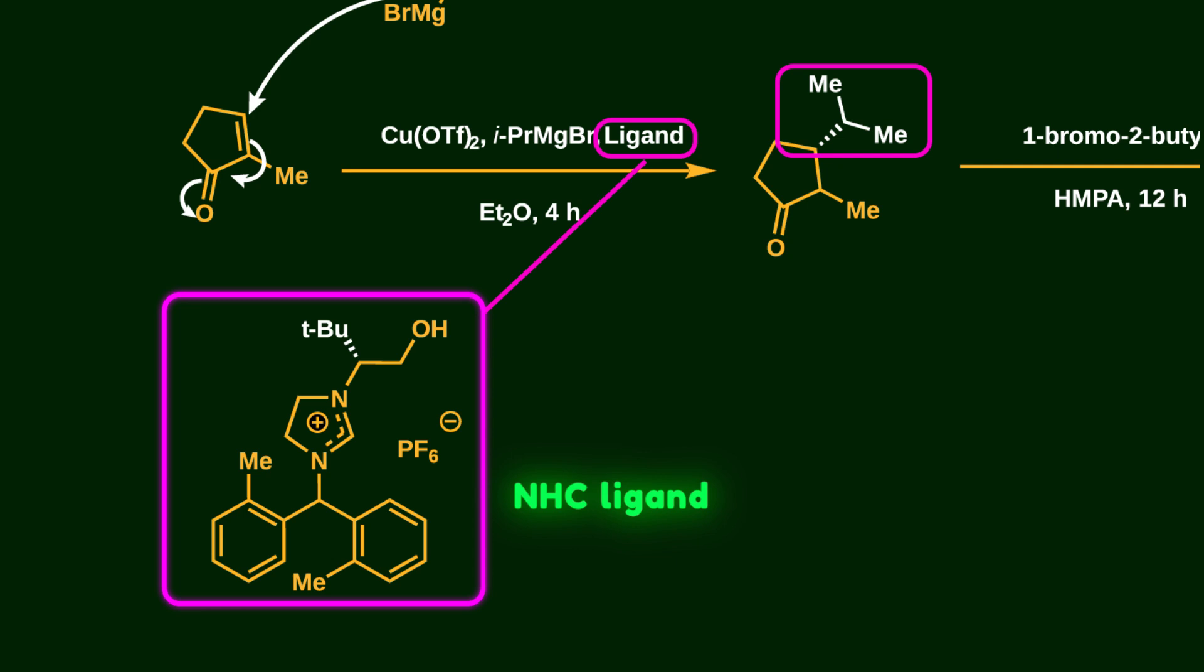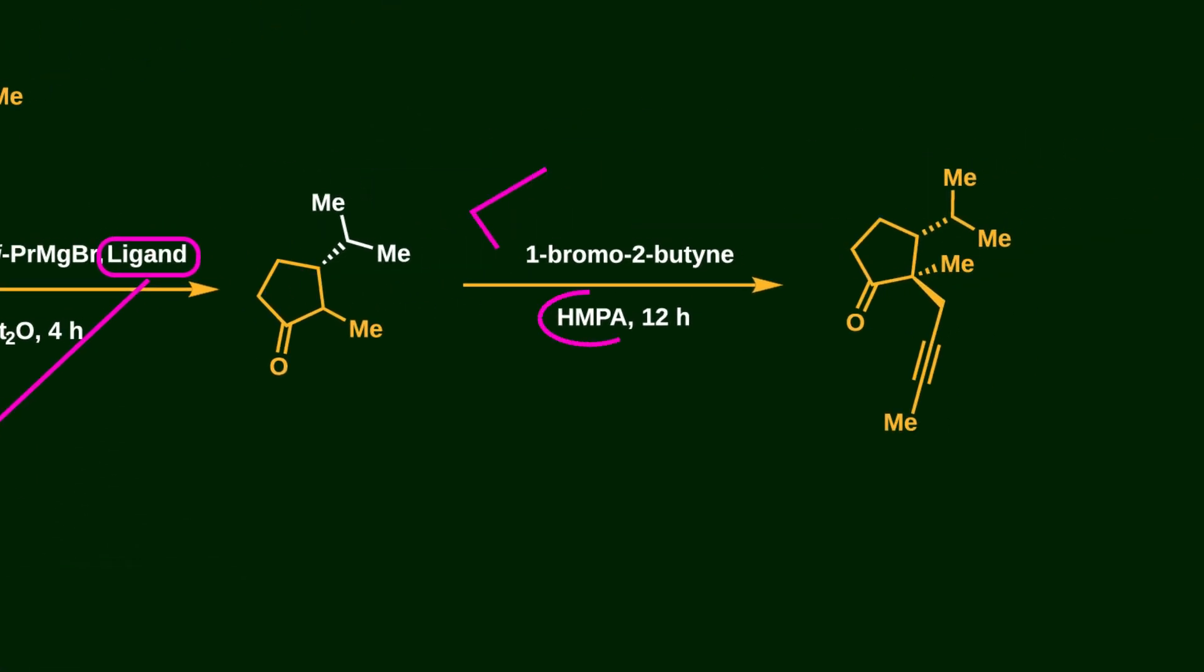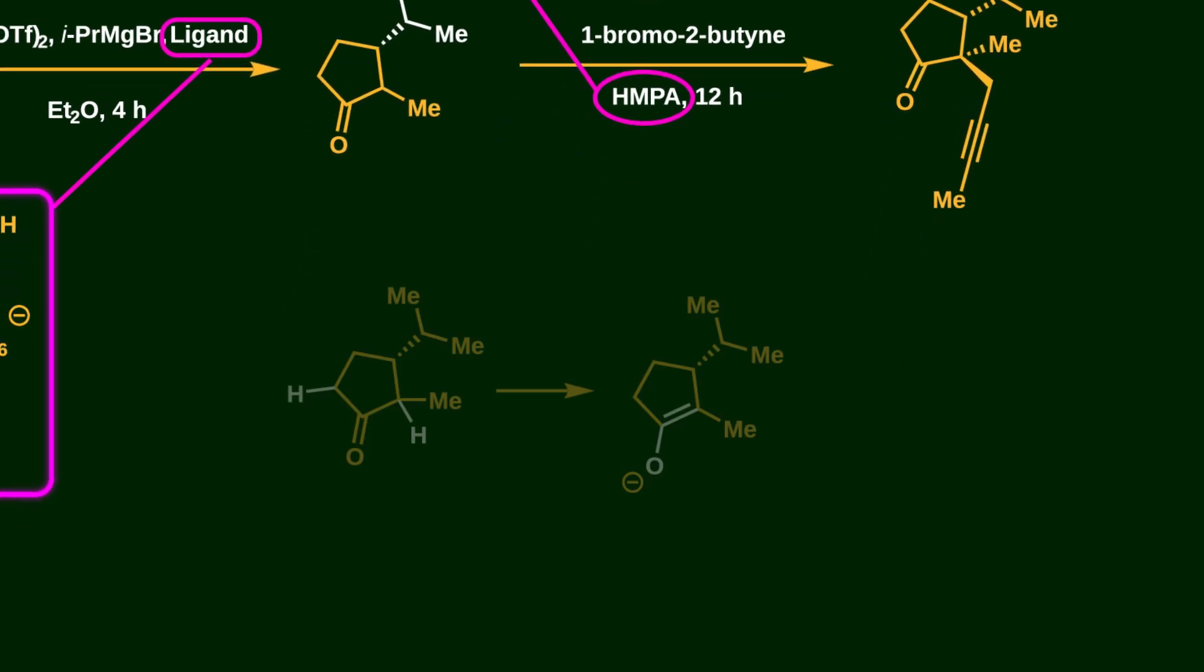Next, the crude product is dissolved in HMPA, an aprotic, highly polar solvent that stabilizes the enolate. There are actually two types of hydrogens in cyclopentanone, but this reaction is under thermodynamic control, so the more stable enolate is formed under the reaction conditions.